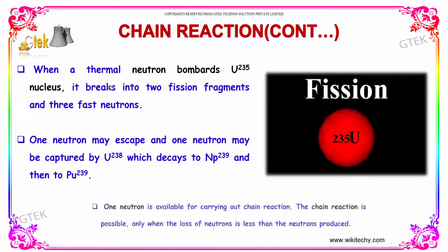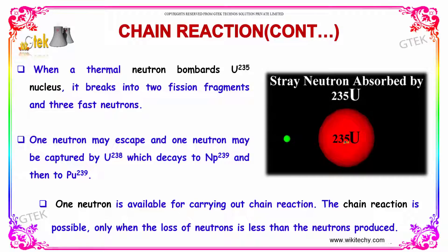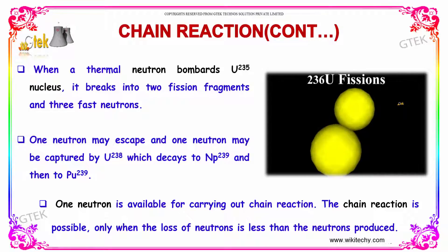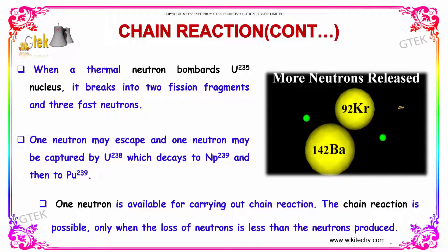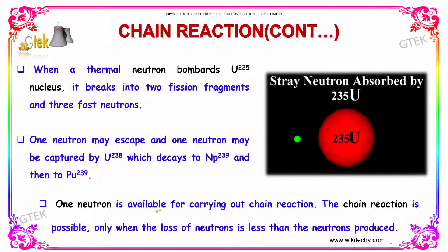When a thermal neutron bombards a uranium-235 nucleus, it breaks into two fission fragments and three fast neutrons. One neutron may escape and one neutron may be captured by uranium-238, which decays to neptunium and plutonium.